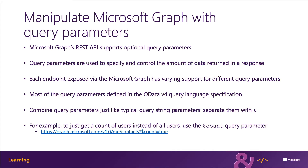For example, the count query parameter, when set to true, will tell Microsoft Graph to report the total number of items in the collection, regardless of how many items are returned by the request. In certain situations, the count parameter can dramatically reduce the amount of data returned by the service, reducing the amount of work that Microsoft Graph has to take to calculate the value and all the bandwidth consumed by your application.